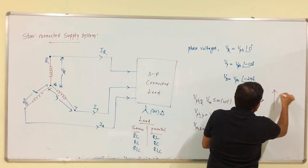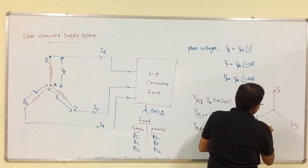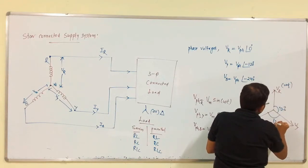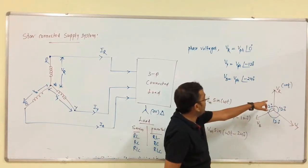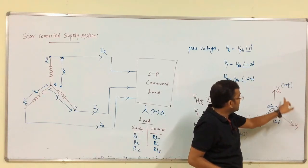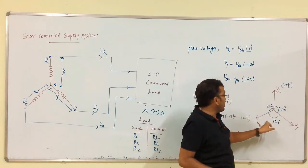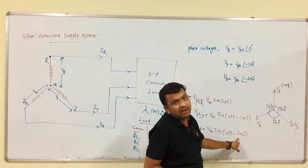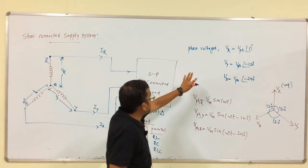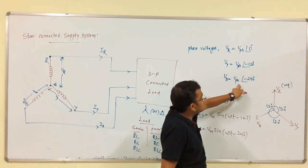So Vr, Vy, Vb are the phase voltages. Vr can be taken as reference. Then between each pair, we have 120 degrees. Vy lags R phase by 120 degrees — that is why minus 120. Vb lags R phase by 240 degrees. So phase voltages are: Vr = Vphase at 0°, Vy = Vphase at −120°, Vb = Vphase at −240°.